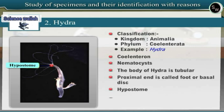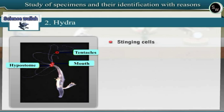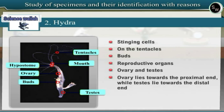The mouth is surrounded by a circlet of 6 to 10 tentacles. Stinging cells or nematocytes are present on the tentacles. The body of Hydra may bear one or more lateral outgrowths called buds. Budding is the asexual mode of reproduction in Hydra. The bud on further development gives rise to new Hydra. The animal also shows reproductive organs like ovary and testes. The ovary lies towards the proximal end while testes lie towards the distal end.